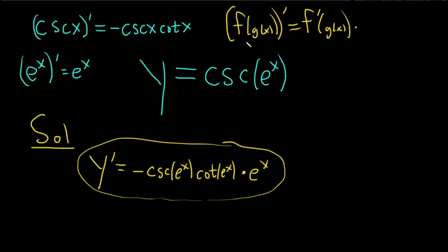And then times the derivative of the inside, which is your e^x. So times g prime of x. Your g here is e^x. That's how we got the derivative of that, which was e^x.